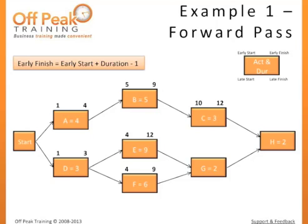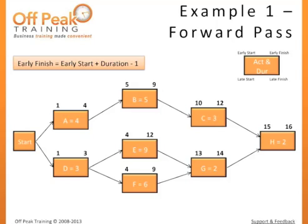Task G has two predecessors. Since both must be complete before G can begin, we will use the later of the two early finishes. So G's early start will be day 13. Using our formula, 13 plus 2 minus 1, the early finish is 14. Now we are ready to find the early start for H. H also has two predecessors, so its earliest start will be the beginning of the 15th day. Using our formula, 15 plus 2 minus 1, the early finish is the end of the 16th day. We have now completed our forward pass. The earliest we can possibly finish the project is the end of the 16th day.